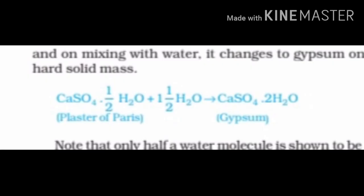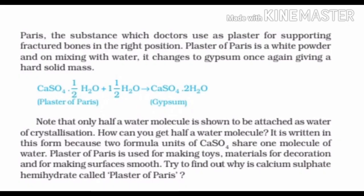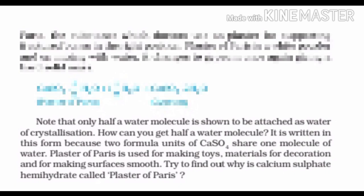On adding water to plaster of Paris, it changes to gypsum once again, giving a hard solid mass. If you look at the formula of plaster of Paris, only half a molecule of water is attached to it. This means that one full molecule of water is shared by two molecules of calcium sulfate. This was all in the topic of salts. Thank you, class 10.